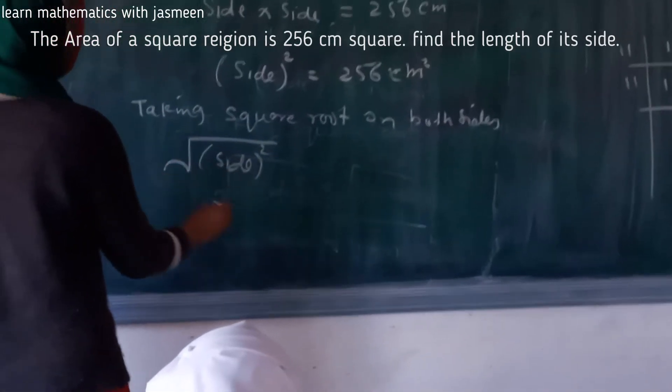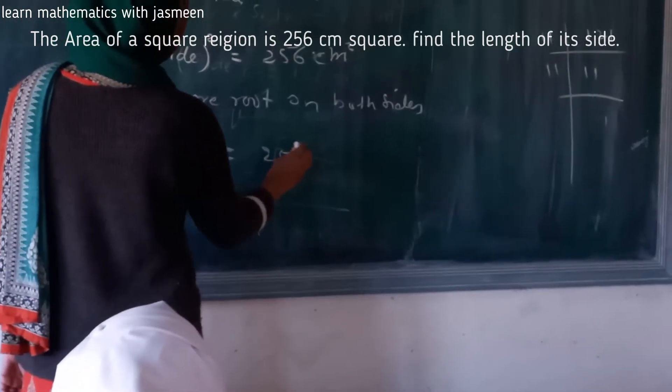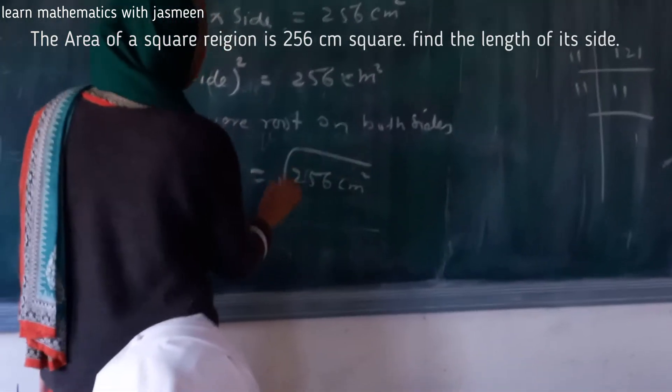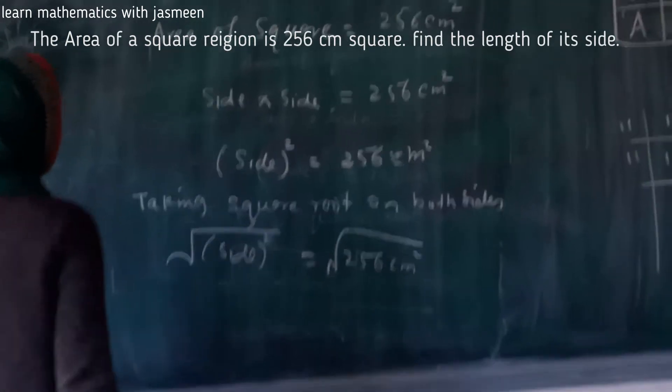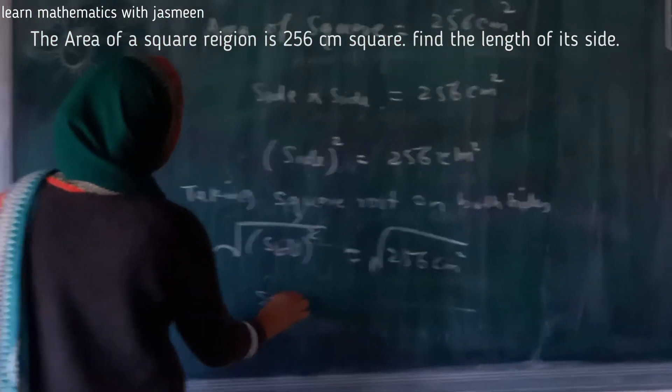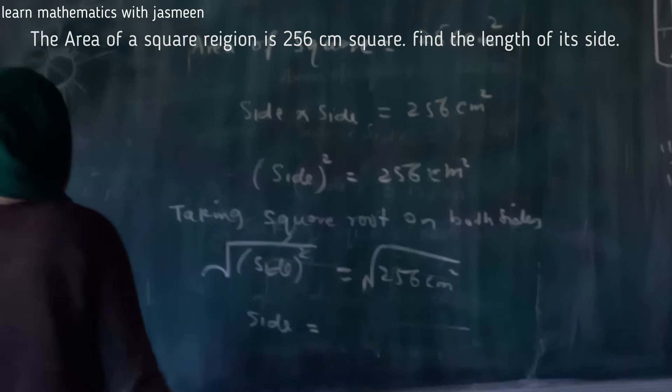Square root of side squared will be equal to square root of 256.